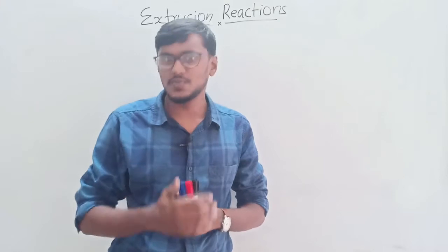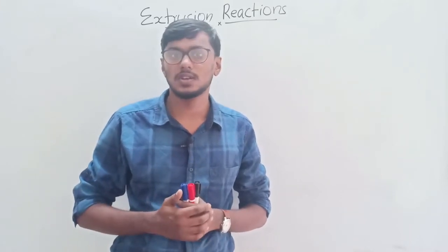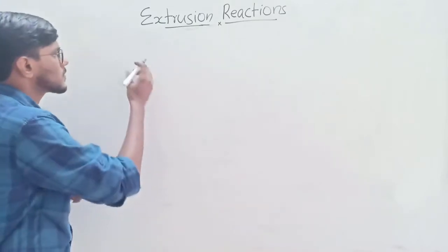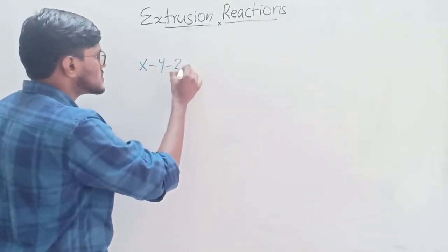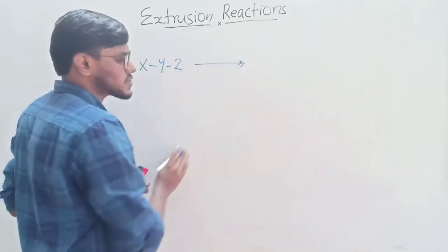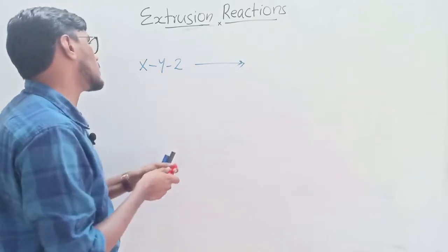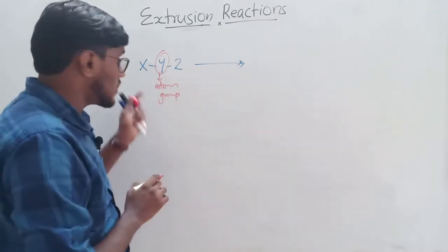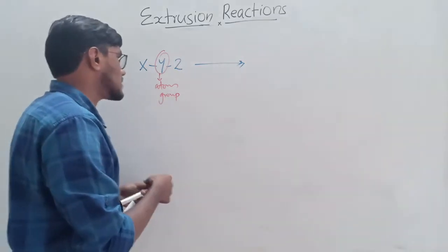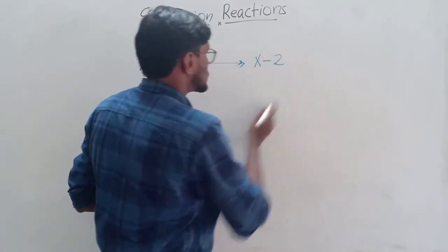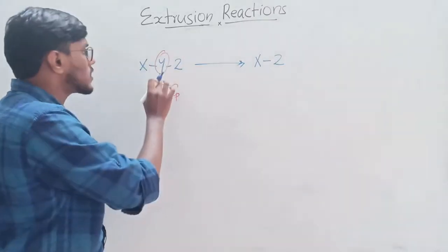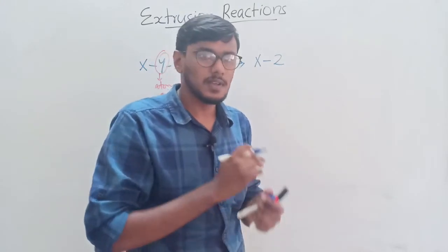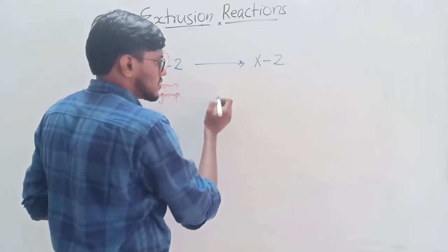Welcome everyone. In this video we are going to discuss extrusion reactions. For example, taking a molecule X, Y, and Z — if it undergoes an extrusion reaction, an atom or group Y is eliminated from this molecule. This group eliminates and forms a new bond between X and Z, and this type of reaction is called an extrusion reaction.